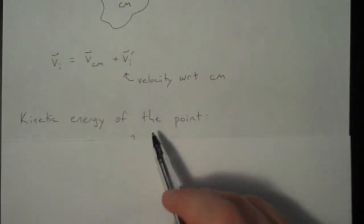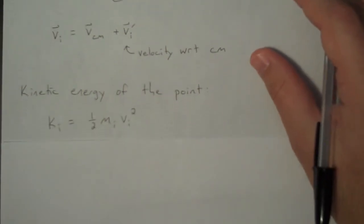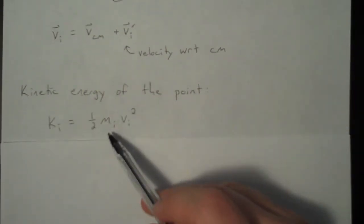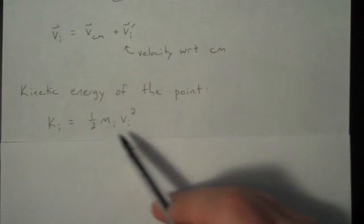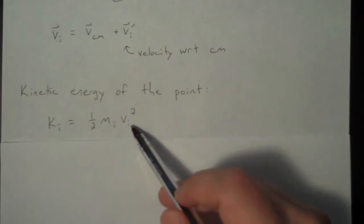Remember what kinetic energy is. Kinetic energy is one-half mv squared. We have to keep track of our subscripts. This is just point i, just one point on the rigid body. And this is the speed of that point.